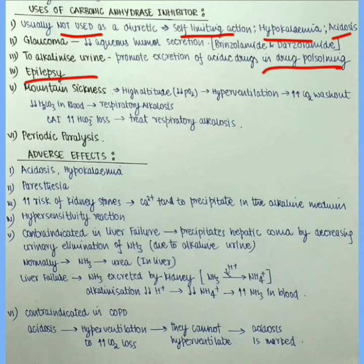But in this process, there is increased CO2 washout. So there is decreased carbonic acid H2CO3 in blood and we have respiratory alkalosis. Carbonic anhydrase inhibitor increases bicarbonate loss in the urine and treat respiratory alkalosis.